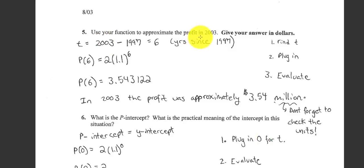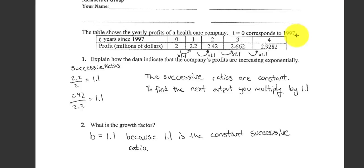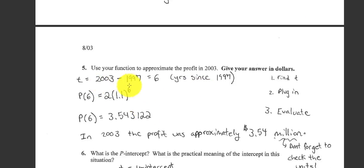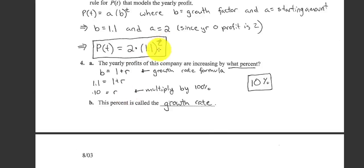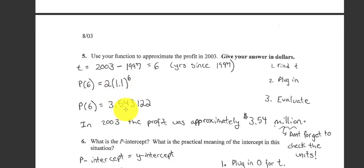Next, it says use your function to estimate the profit in 2003. So remember, the initial value, our initial profits start at time zero, which is 1997. So 2003 is six years later. 2003 minus 97 is six. So I replace the T in my formula with six. My time is six years. That's where the six comes from. When I calculate that, I get 3.5. Remember, that's in millions. So it's 3.5 million.